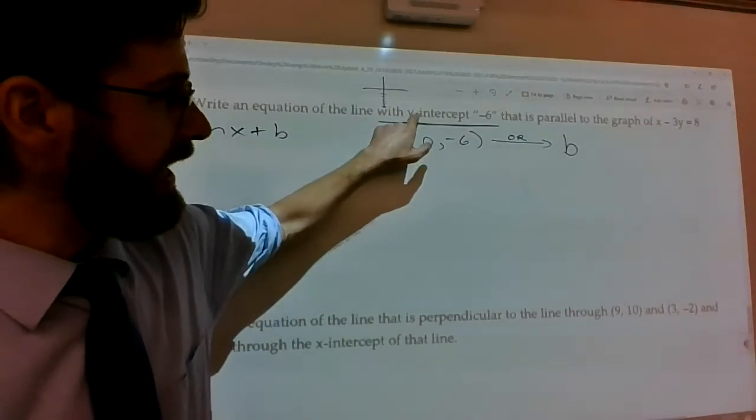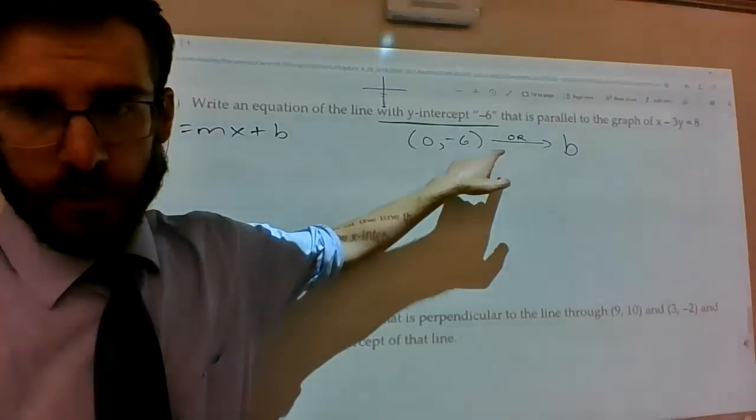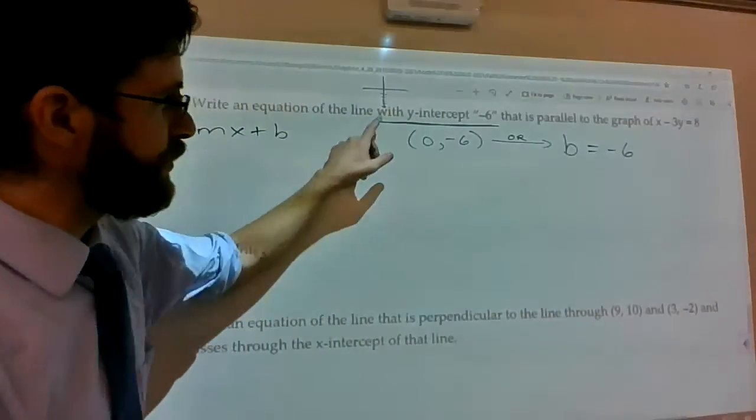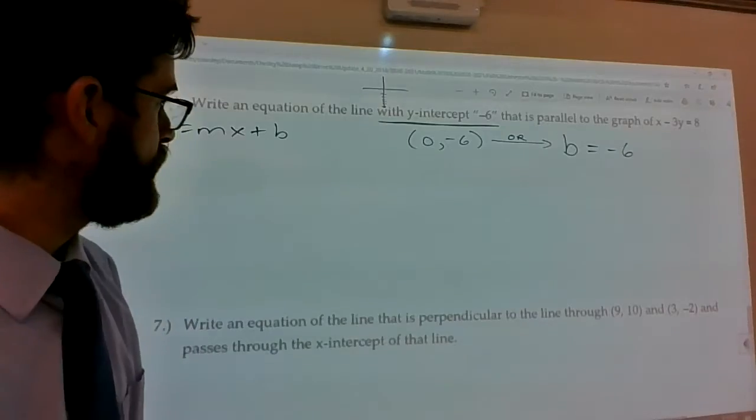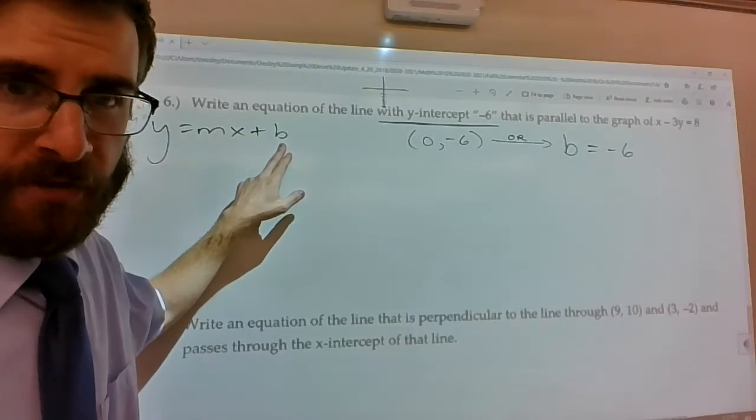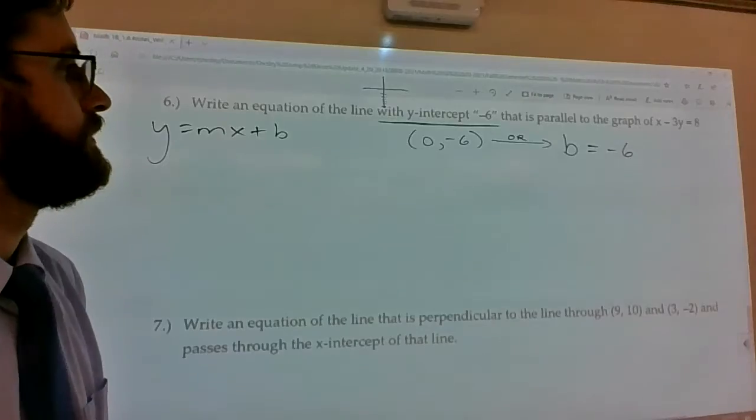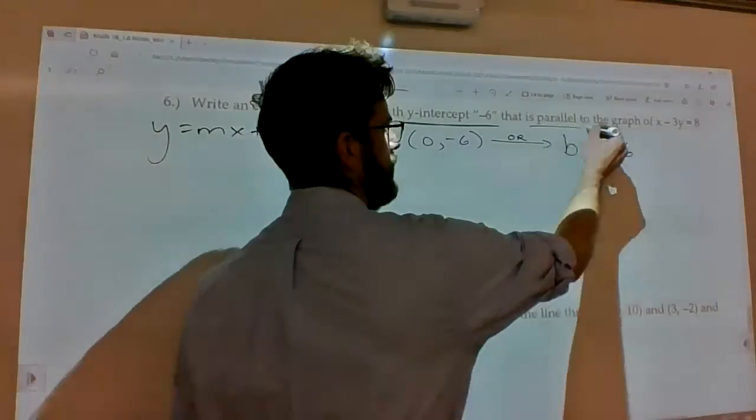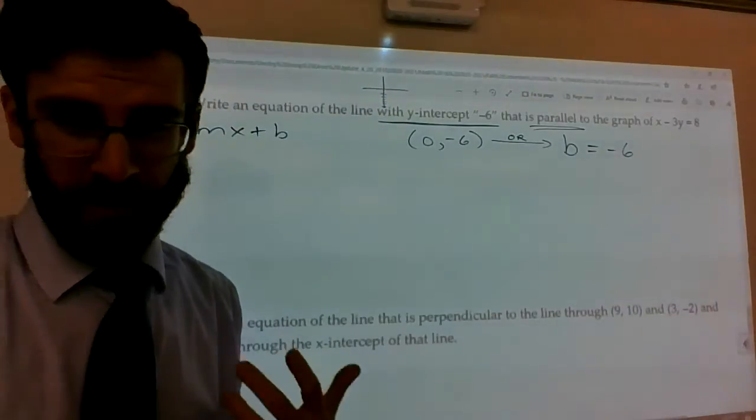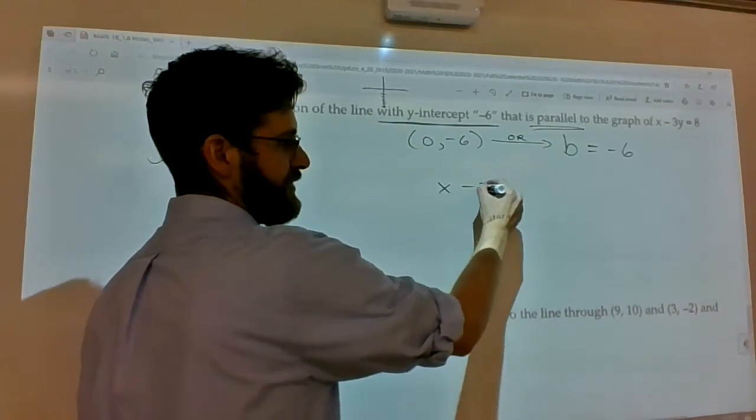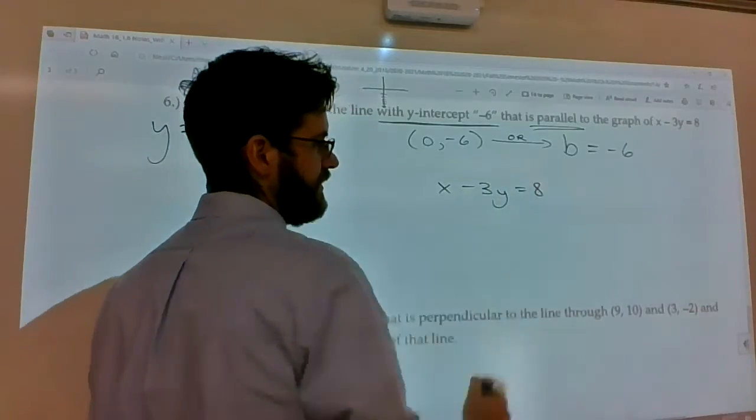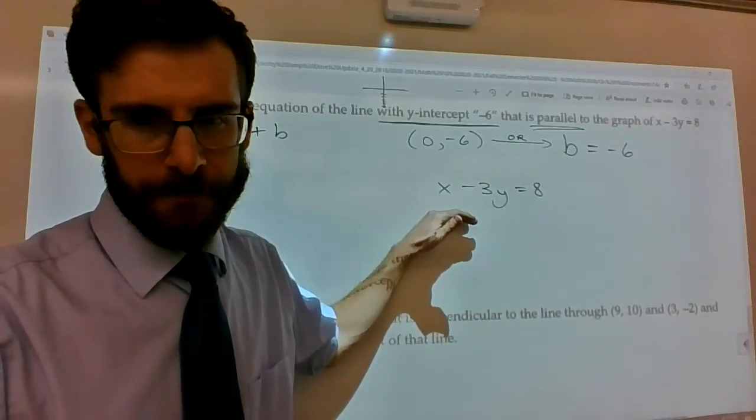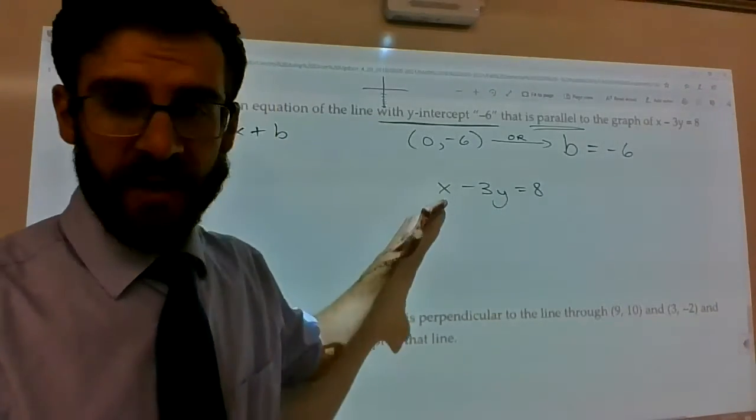Or, you could say, the y-intercept has always represented the b in the equation y equals mx plus b. If you get information like the y-intercept is negative 6, you could just say b equals negative 6. That's the place where our graph would start. So, I already got part of the puzzle here. b is negative 6. The question is, what is m as it relates to x minus 3y equals 8? What would a slope of a parallel line to that be?